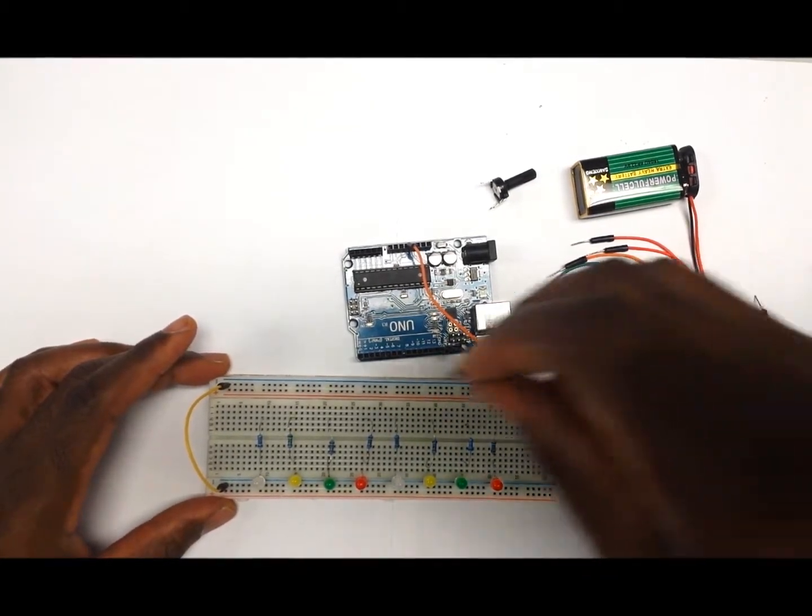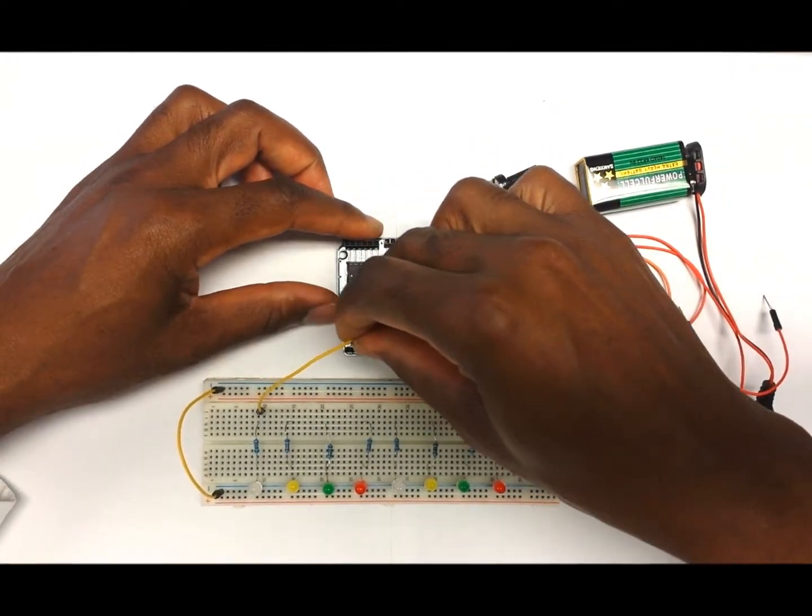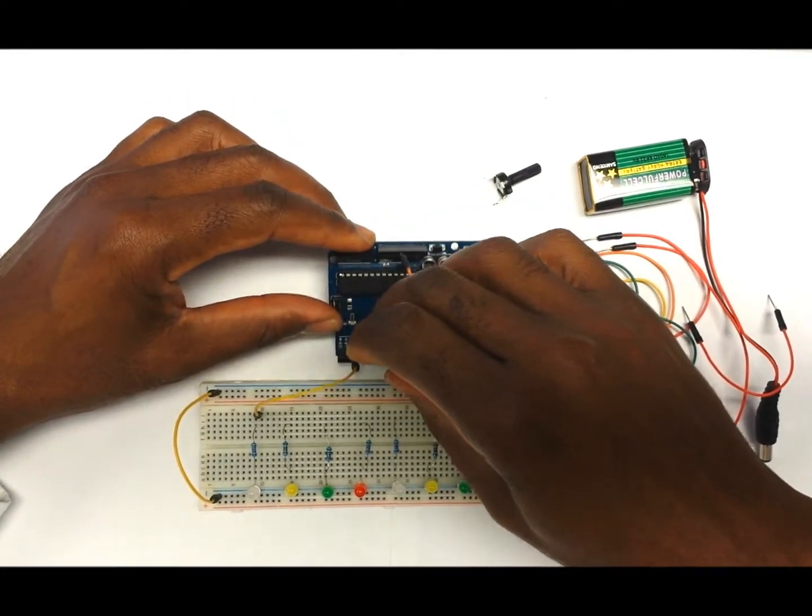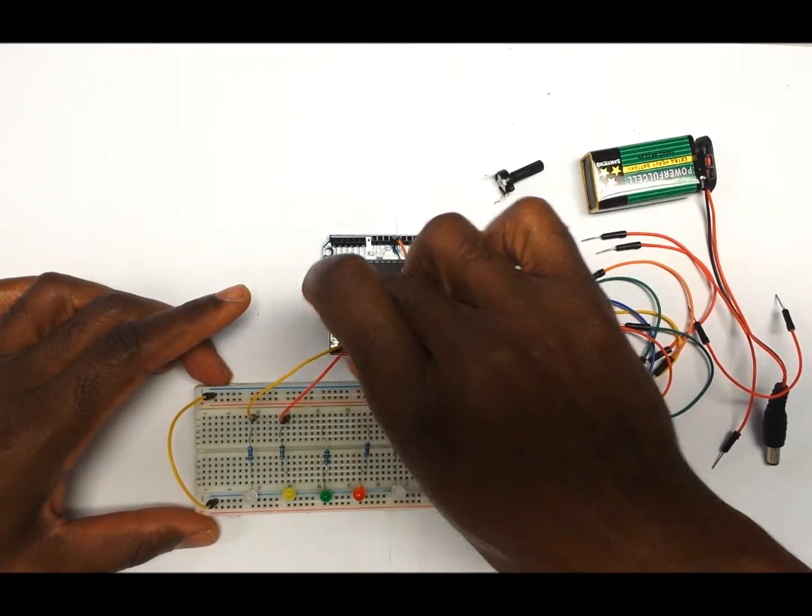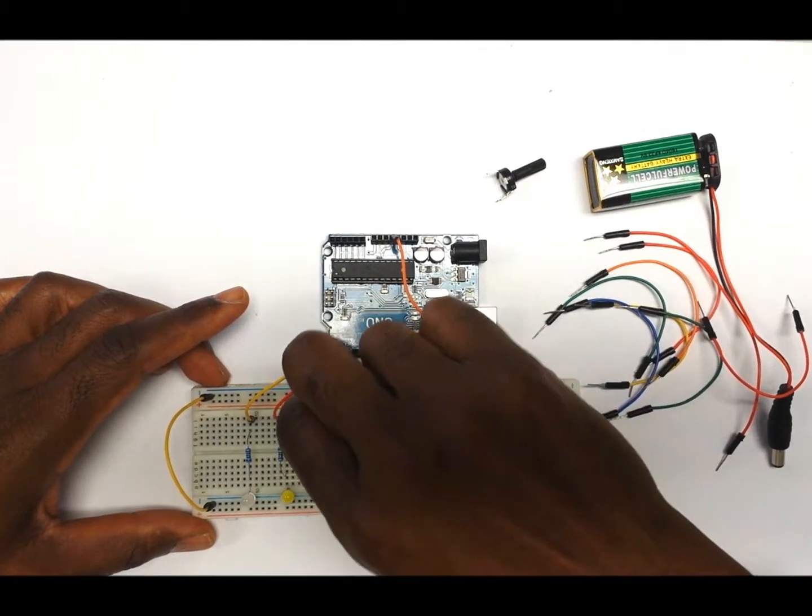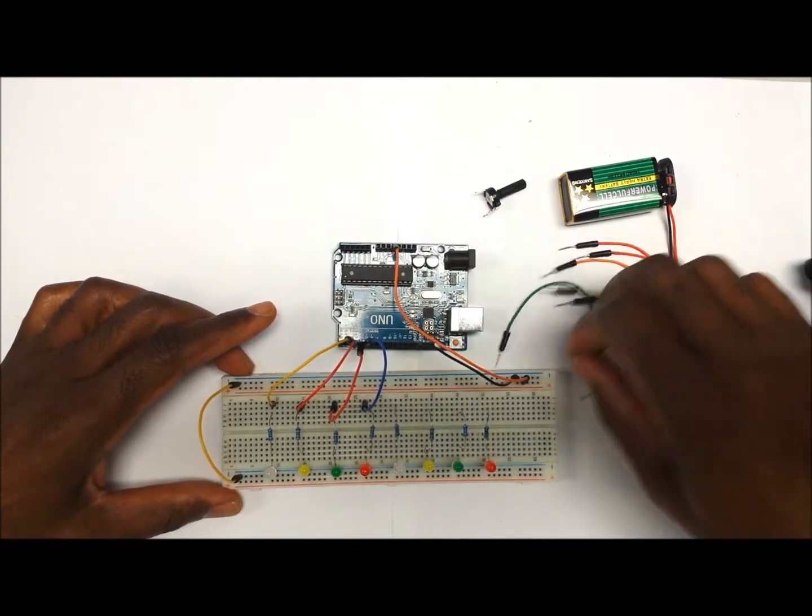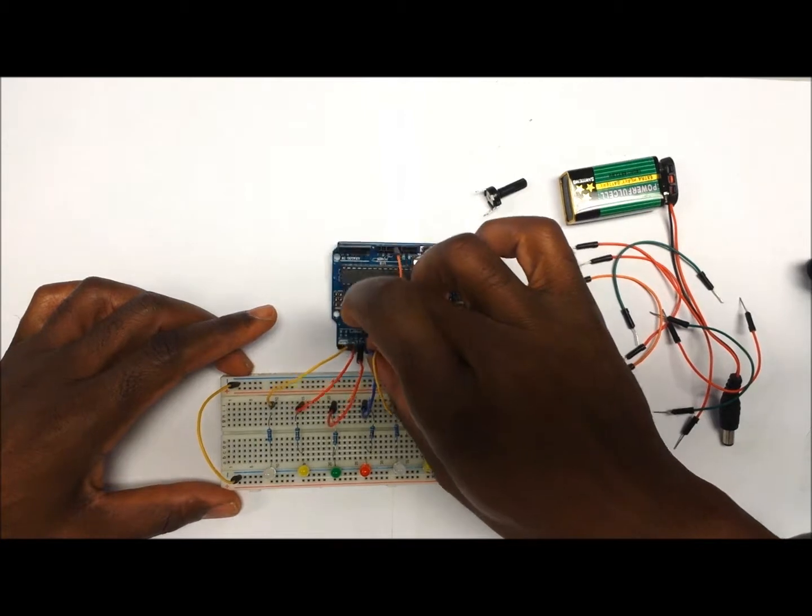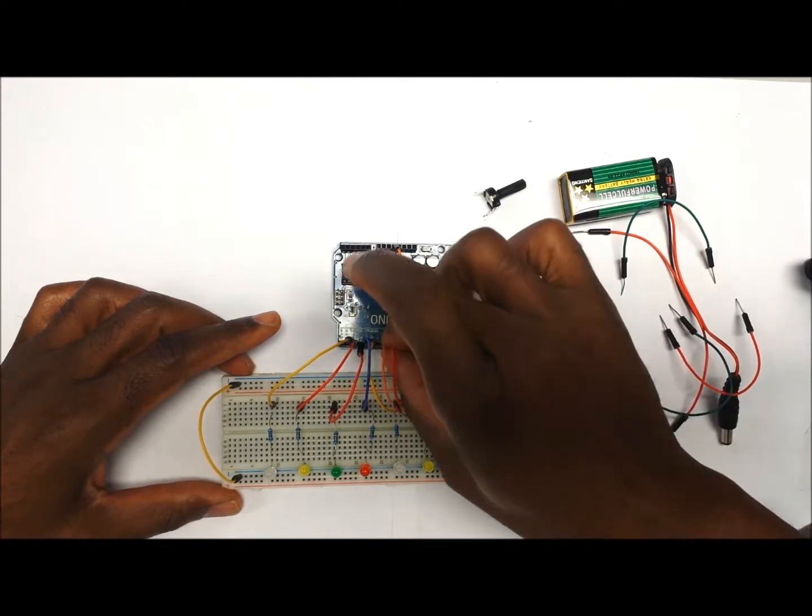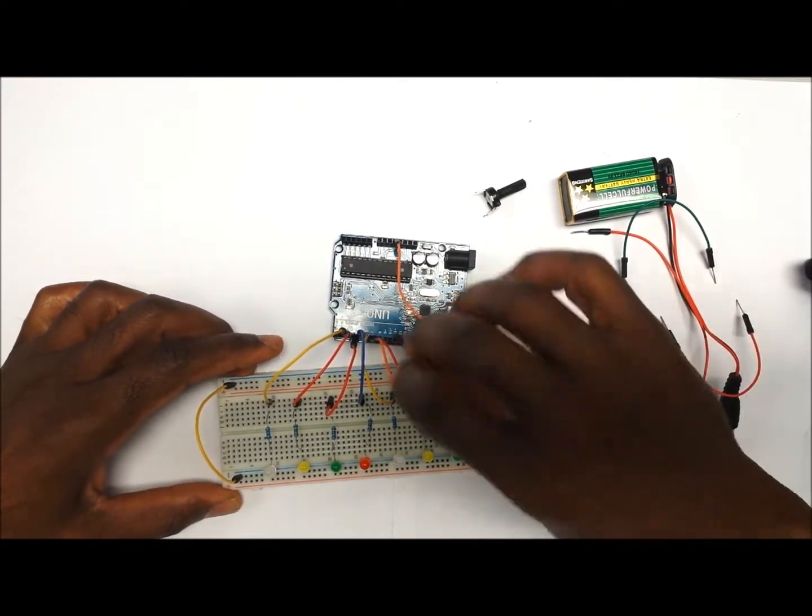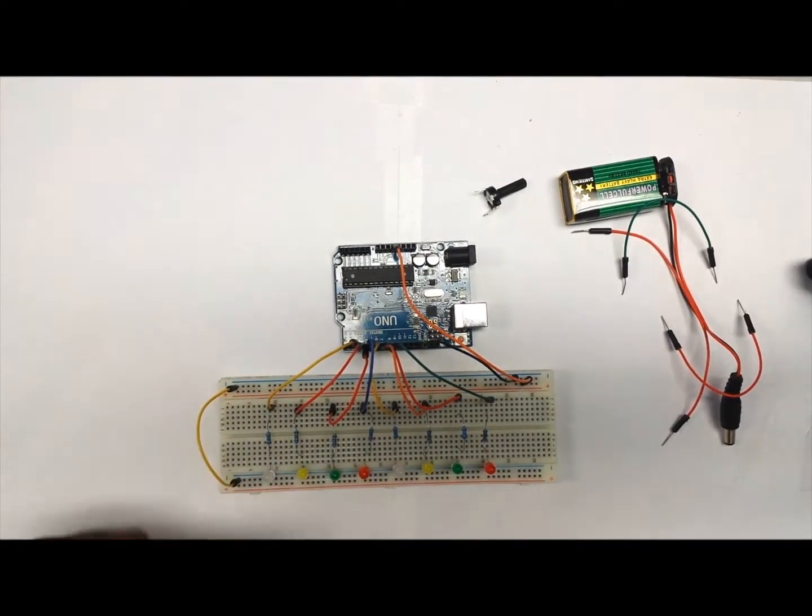So the next thing that we want to do is to take some jumper wires that are coming from the resistor to the breadboard. The first one that we are going to put is going to go to pin number two on the Arduino. The second one will go to pin number three and we continue the process until all the LEDs are hooked onto the Arduino. This completes the hookup for the LEDs and the resistors.